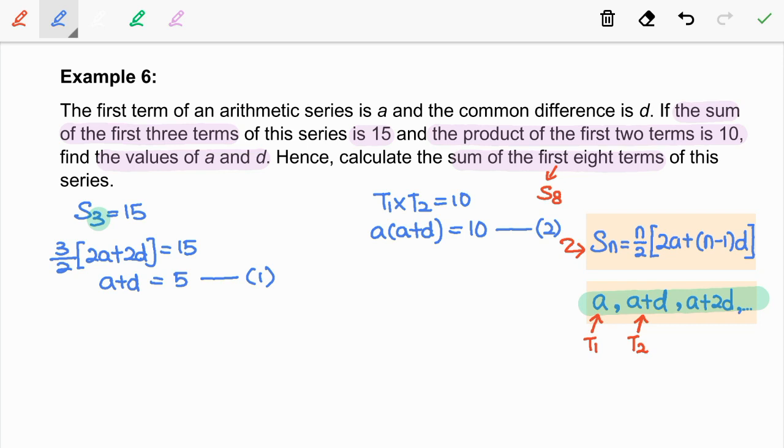Now, we have 2 equations with 2 unknowns. So we are going to solve this equation by using the substitution method. Here, I am going to substitute equation 1 into equation 2. So we have A times 5 is equal to 10. So A equal to 2.